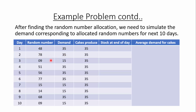The bakery makes 35 cakes every day. For day 1, production is 35 and demand is 35, so all cakes are consumed and stock at end of day 1 is zero. For day 2, production is 35 and demand is 35, so stock at end of day 2 is also zero. For day 3, production is 35 and demand is only 15, so 20 cakes remain as stock at the end of day 3.